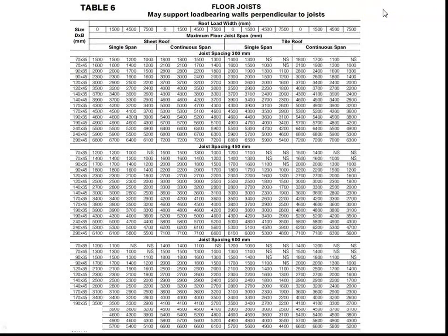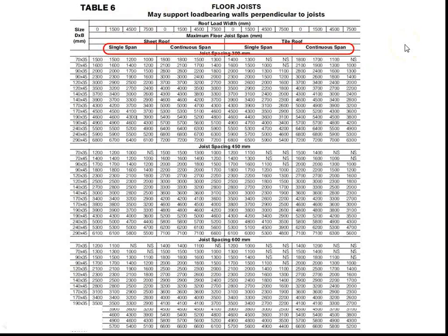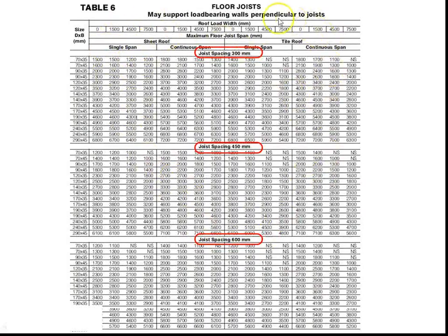There's some information we need to know in order to use this table. The first thing is the roof load width coming down on the floor joist. We need to know what the floor joist span is, what type of roof sheeting or tiling is used, whether the span is single or continuous, and what the joist spacing is. This terminology was covered in the previous video, so if you're not sure, go back and have a look.